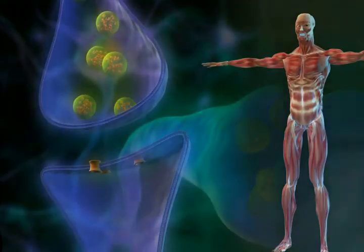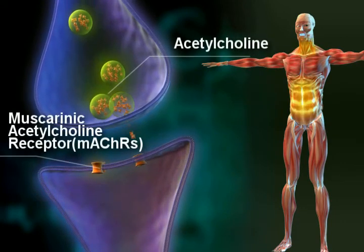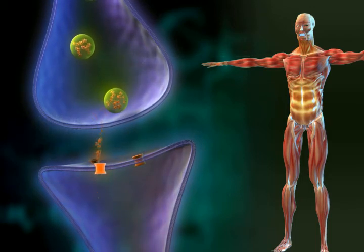Scopolamine reduces the activity of the muscarinic acetylcholine receptor, which control smooth muscle contraction and inhibits glandular secretion.